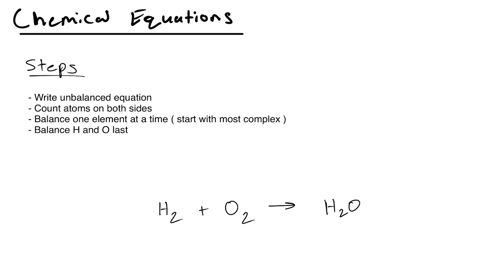Hey everyone, so in today's video I'll be teaching you guys how to balance chemical equations. A chemical equation simply shows a chemical reaction — it tells us what reactants react and what products are formed. The key rule is the number of atoms must be the same on both sides. That's called the law of conservation of mass.